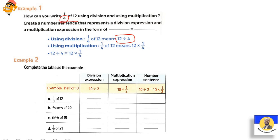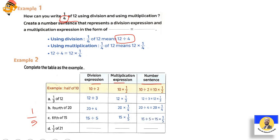Let's complete a table writing expressions in division and multiplication forms. Third of twelve: division is twelve divided by three; multiplication is twelve times one-third. Fourth of twenty: twenty divided by four equals twenty times one-quarter. Fifth of fifteen: fifteen divided by five equals fifteen times one-fifth. One-seventh of twenty-one: twenty-one divided by seven equals twenty-one times one-seventh.